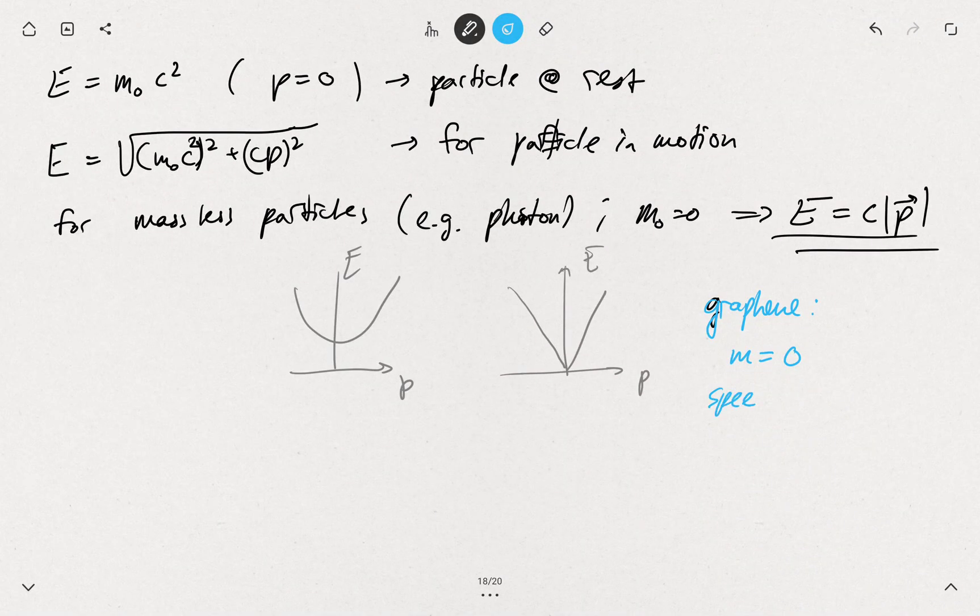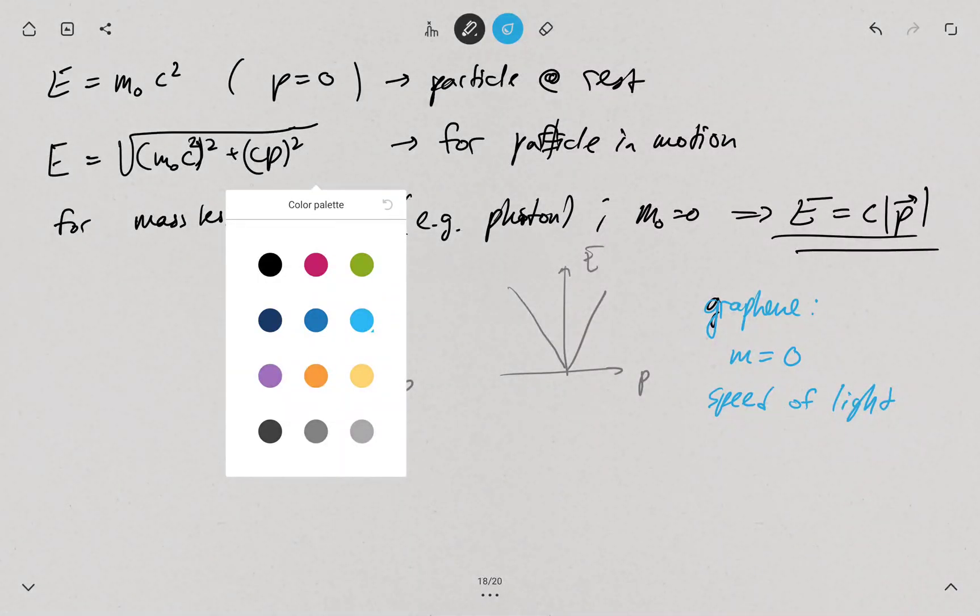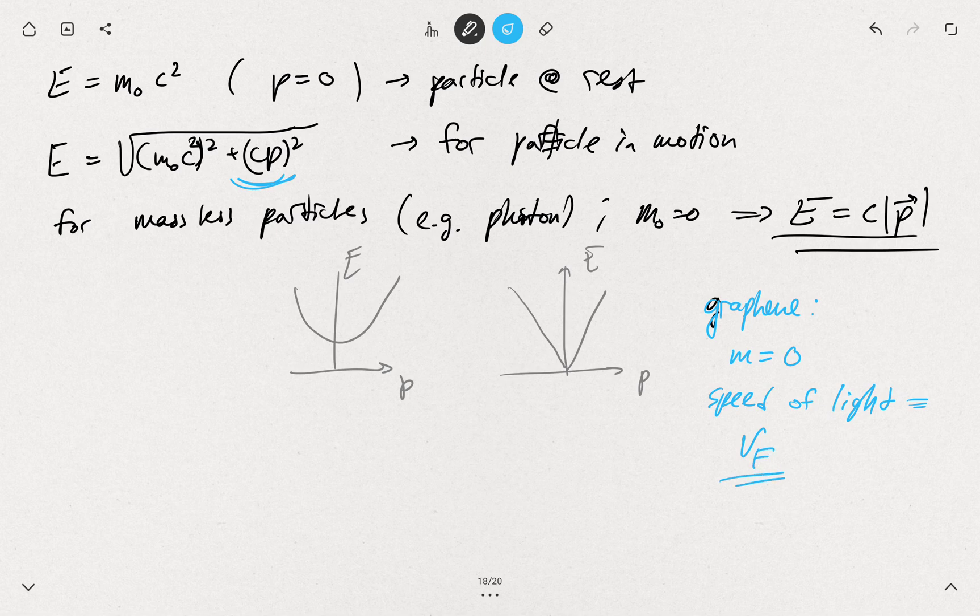And our speed of light here is vF, the Fermi velocity.